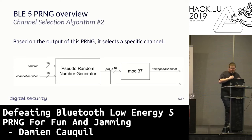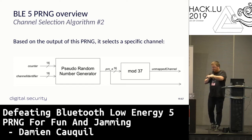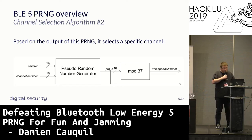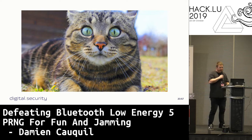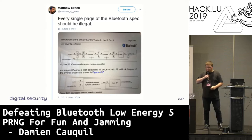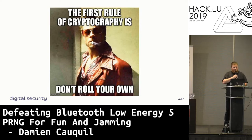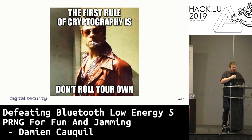Looking at the specs, if there is no channel remapping, you take this random number, compute mod 37, and get your channel. When I saw this in the specs, I was like — what the hell. On Twitter, Matthew Green also tweeted about the specs, saying basically that every page should be illegal. The first rule of cryptography is: don't roll your own crypto. When you are designing a new PRNG for a spec, creating your own is not really the best idea.